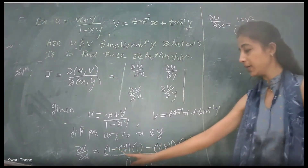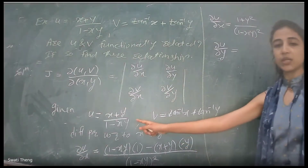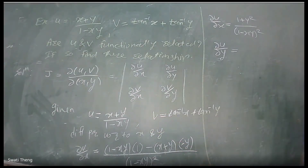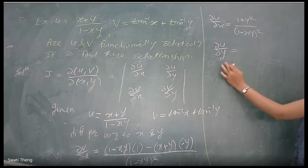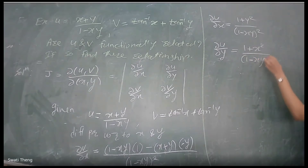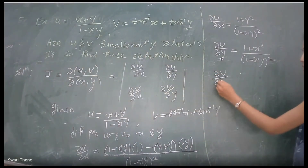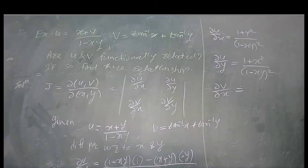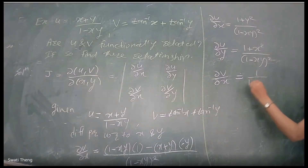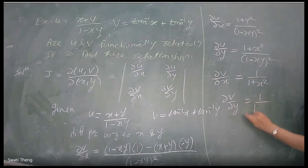Similarly, del u/del y can be found by interchanging x and y in the u function — since the function is symmetric in that way. So del u/del y equals (1 plus x squared) divided by (1 minus xy) squared. For v equals tan inverse of x plus tan inverse of y: del v/del x equals 1 upon (1 plus x squared), and del v/del y equals 1 upon (1 plus y squared).